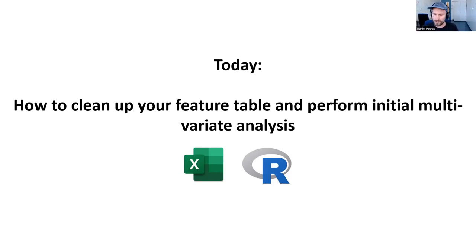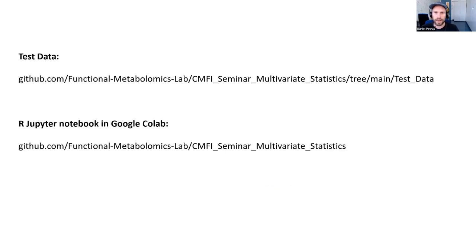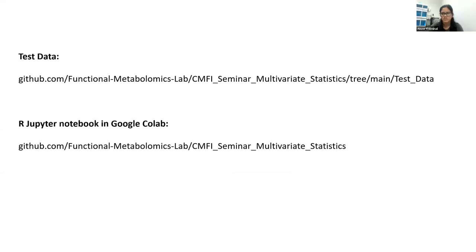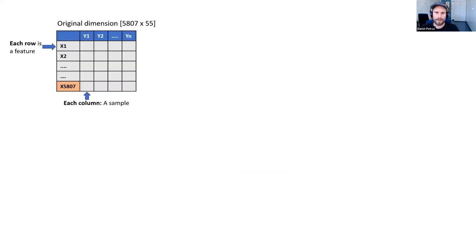We sent you two links yesterday. For the hands-on part, I'd suggest you open both — maybe copy the links in the chat in case people didn't get that email. Those links will bring you to the test data, especially for the Excel exercise where you'll need two CSV files. It also gives you a link to Google Colab — basically a Jupyter notebook for the R code Absar wrote — which we'll go through step by step for the rest of the seminar.